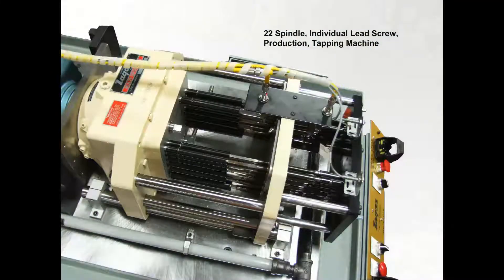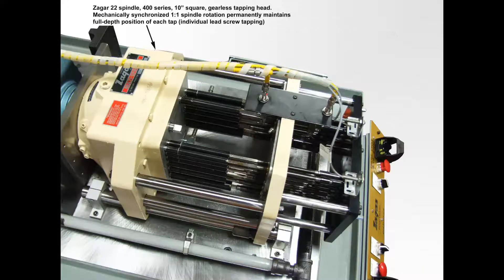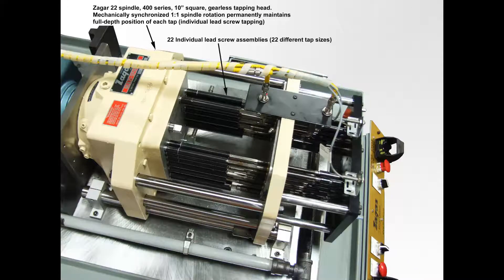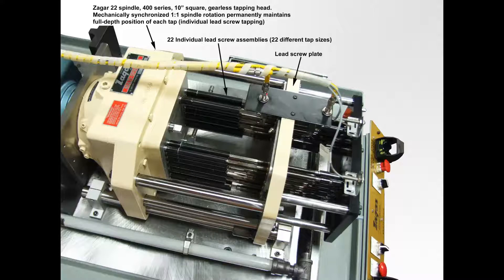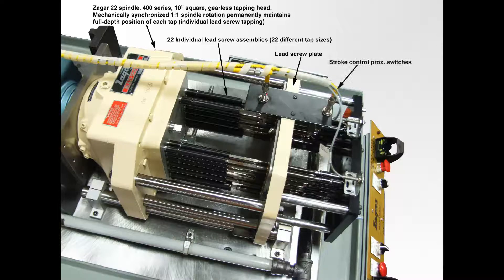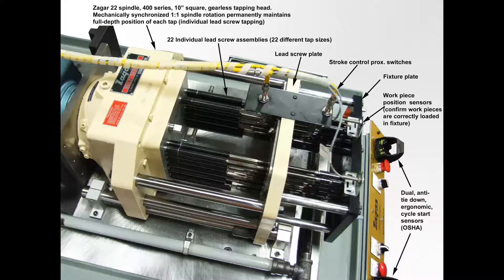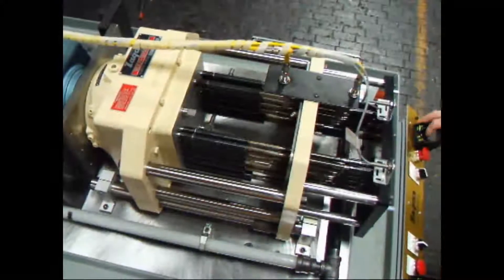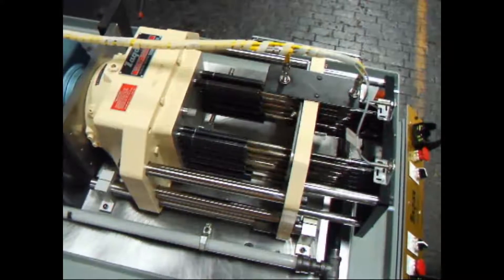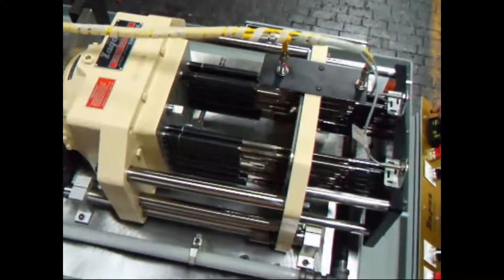The 22 spindles are driven by a Zagar gearless multiple spindle tapping head. All 22 spindles are mechanically synchronized to each other. Each spindle rotates the exact same number of revolutions at the same time. The number of revolutions or length of travel is adjusted with control collars and a separate lead screw that is monitored by proximity sensors. This permanently maintains the accurate fold-depth position of each tap without adjustments through years of production cycles.